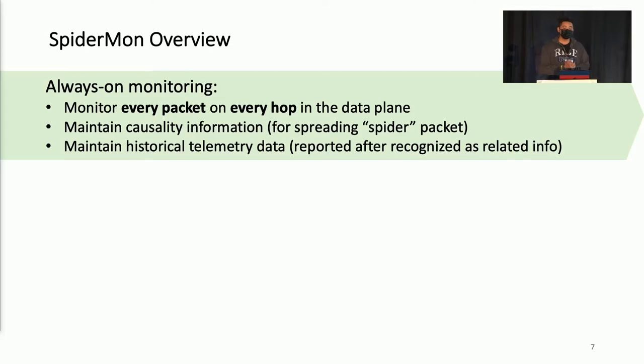In Spider-Man, to capture all problems in the network, we have an always-on monitor. Note that this is only a monitor. It monitors all packets on all hops in the data plane. It also maintains some causality information and telemetry data at the same time, but all those data will be only used or collected when necessary. For example, the causality information is only being used when trying to broadcast or spread the Spider packets.